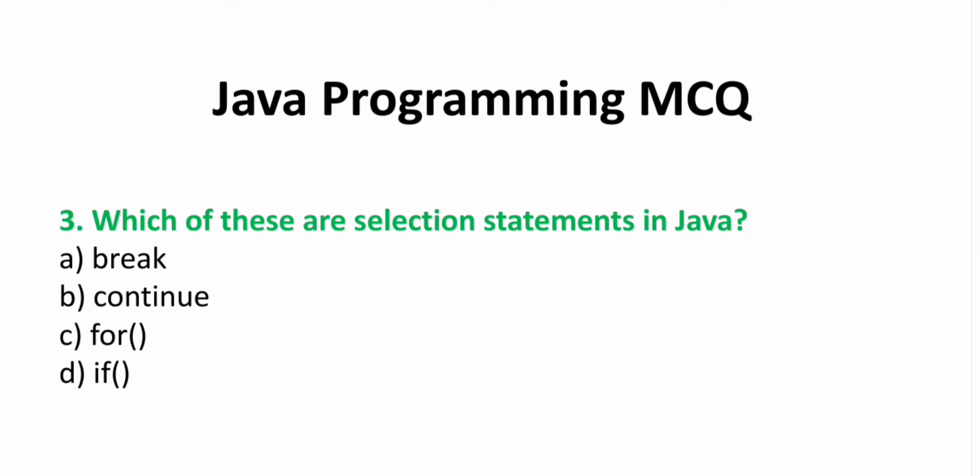Third, which of these are selection statements in Java? A. Break  B. Continue  C. For  D. If. Answer: B. Continue.